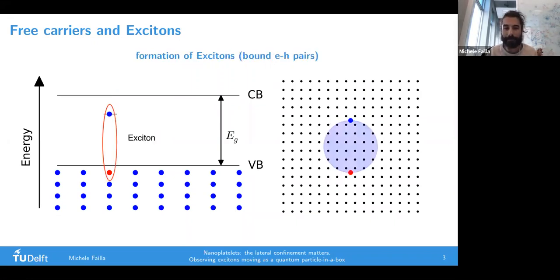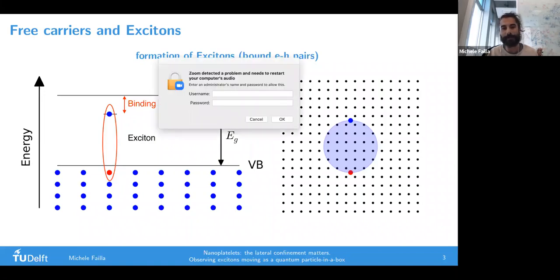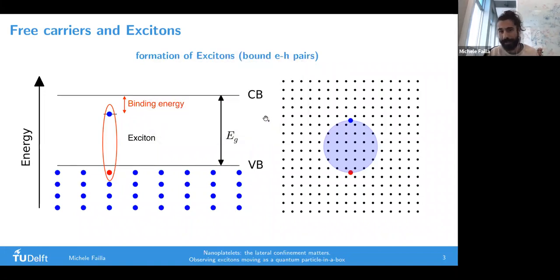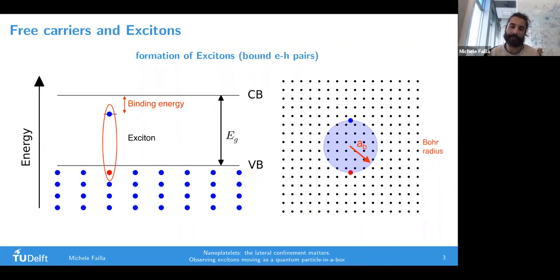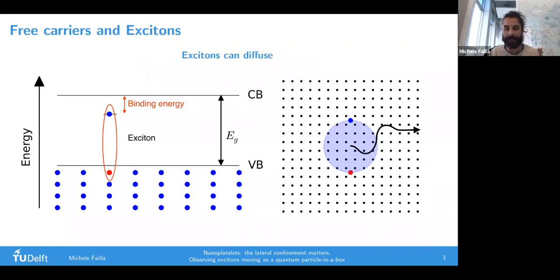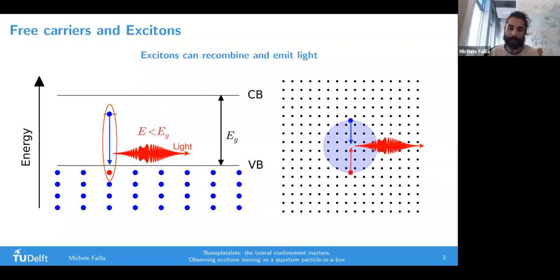Excitons are bound electron-hole pairs and the energy of the exciton lies within the band gap. An interesting property of the exciton is that it has a certain Bohr radius - the distance between the two charges. Like free charges, these species can diffuse, but eventually can recombine and emit light.